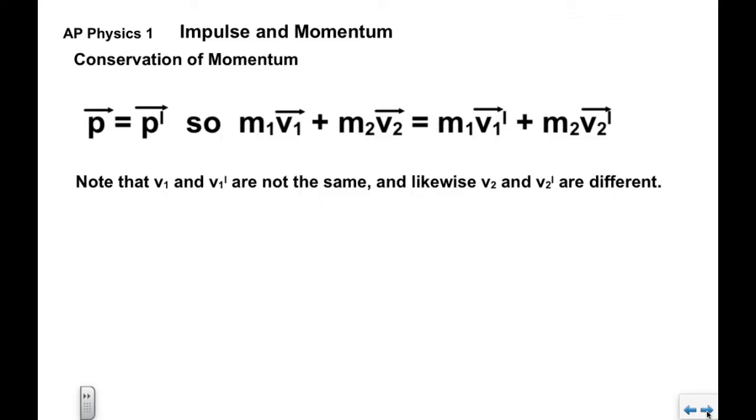We can note that v1 and v1 prime are not the same. This is object 1's velocity before, and then this is object 1's velocity after. There's v2, object 2 before, object 2 after. They are different.